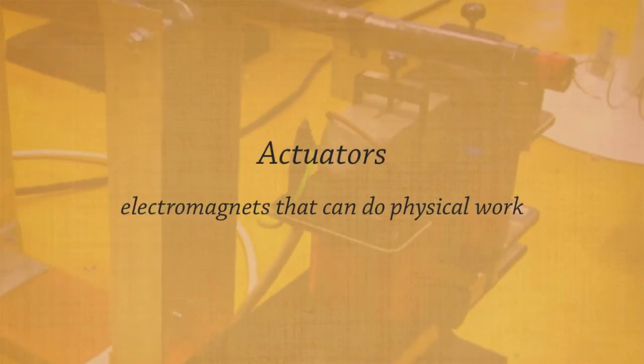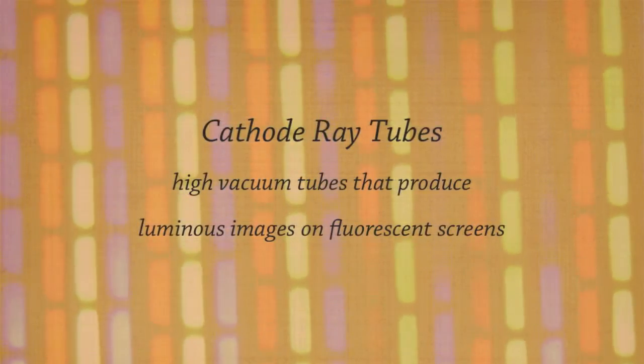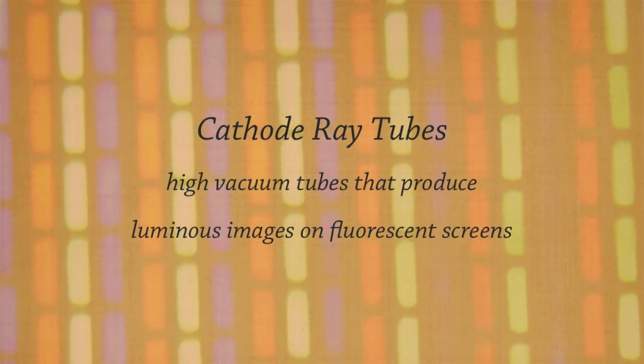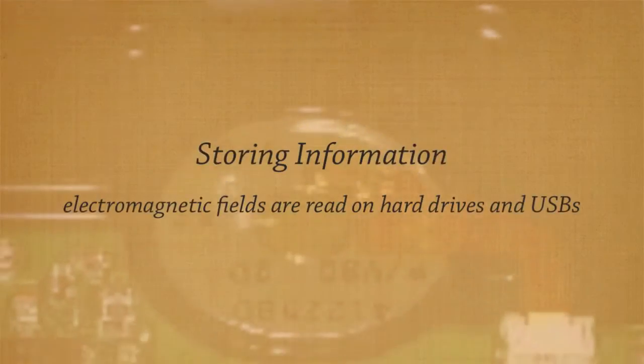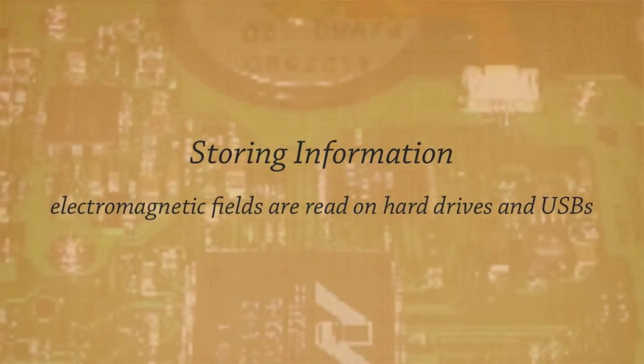Electromagnetism is useful to society in many ways. Moving objects and storing information are two commonly used forms of electromagnetism.